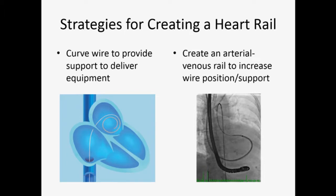Strategies to create a heart rail. There's one we use every day that probably is not the traditional definition of a rail — the picture on the left shows an Inoue wire that curls with multiple curves. We use this for TAVR in the left ventricle, essentially trying to give yourself more support than you'd normally have with a lack of real estate. On the right, you have the traditional sense of a heart rail, which usually involves an AV connection of some sort. We saw a nice example earlier with the post-MI VSD.